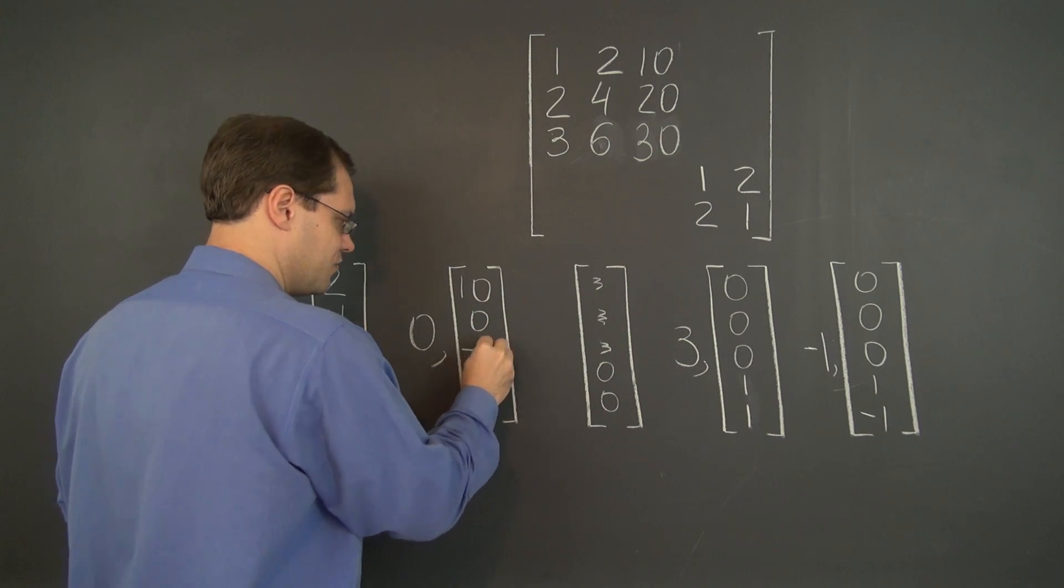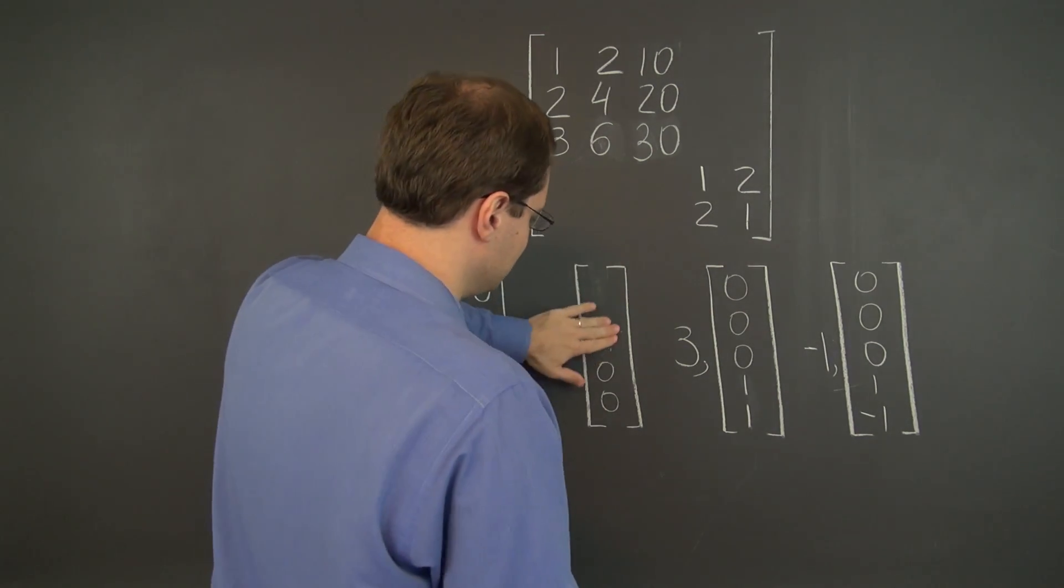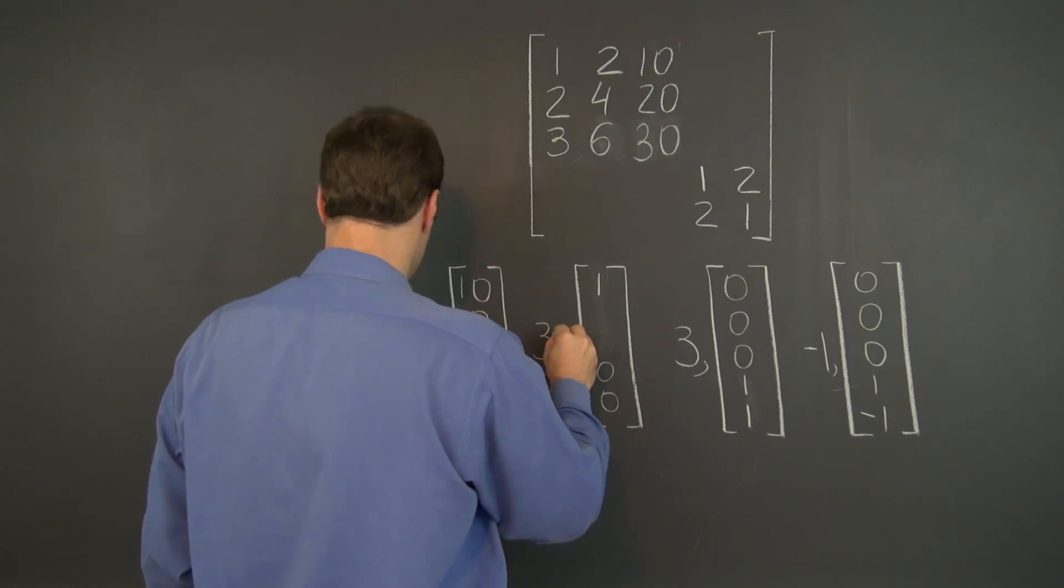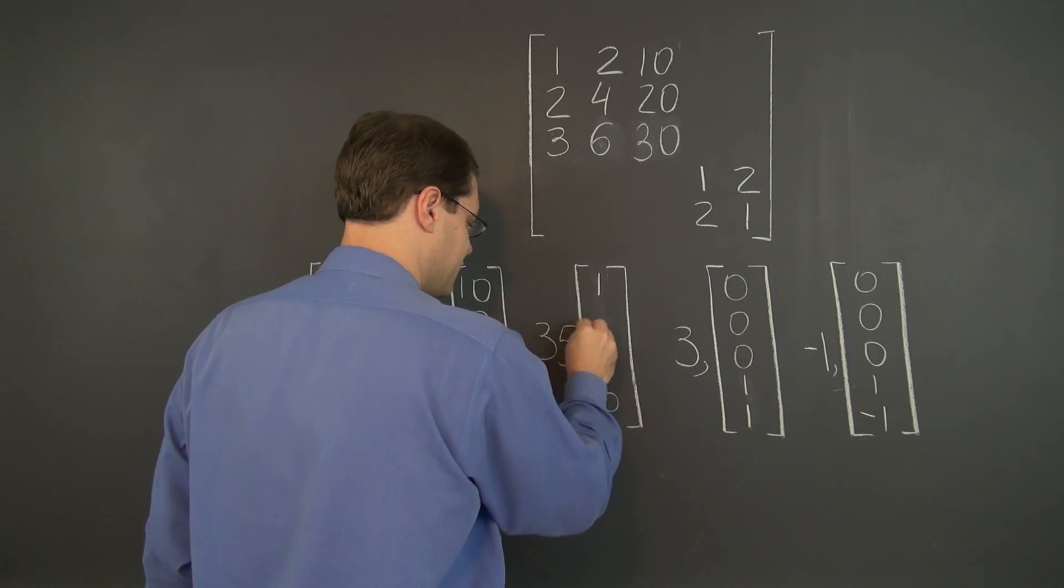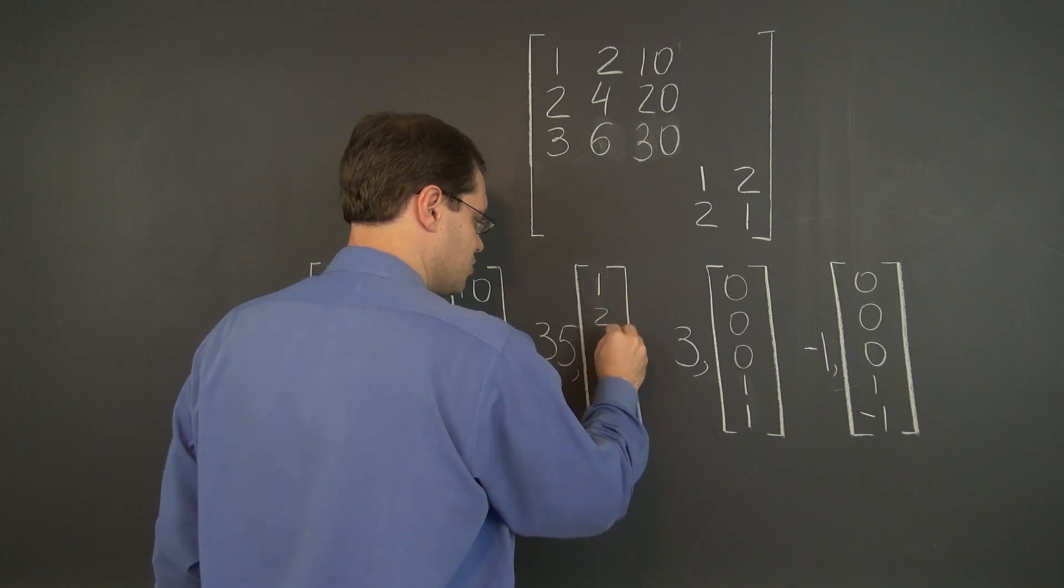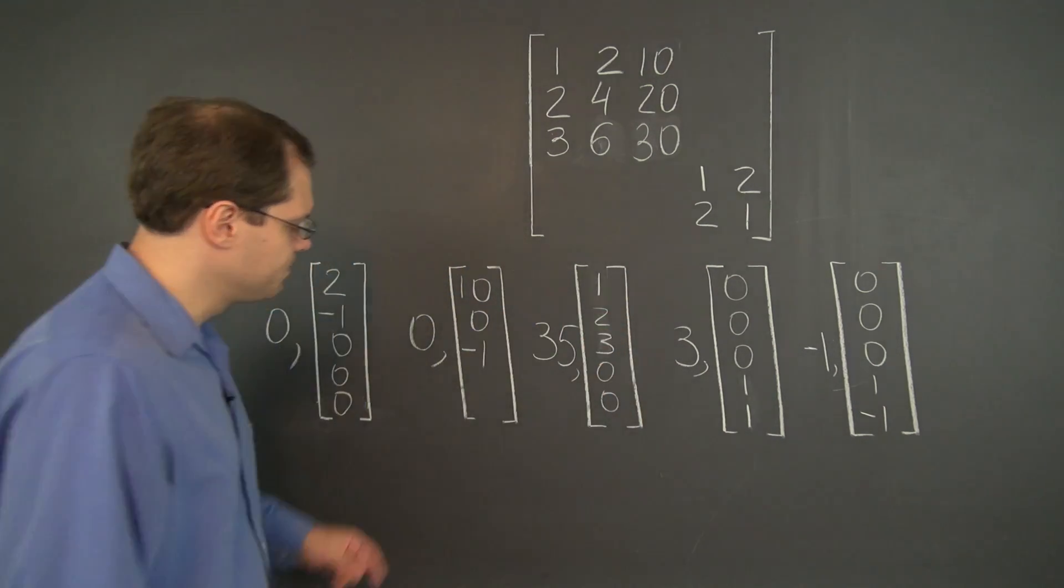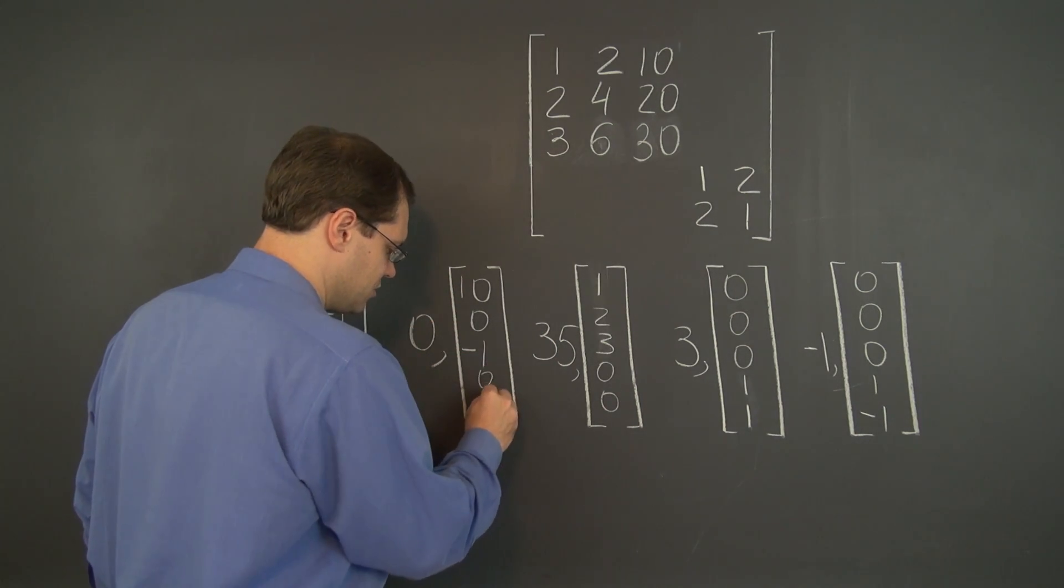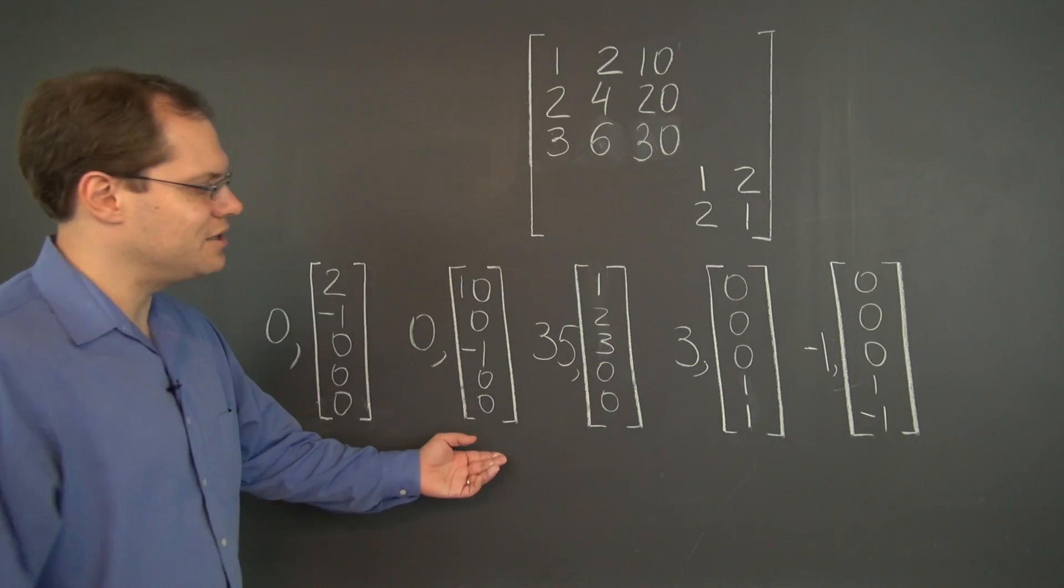So this will be ten, zero, negative one. And then finally this will be, do you remember that eigenvector? That corresponded to the crazy eigenvalue of 35. It was one, two, three. And then of course zero, zero. And this was ten, zero, negative one, zero, zero. And there you go.